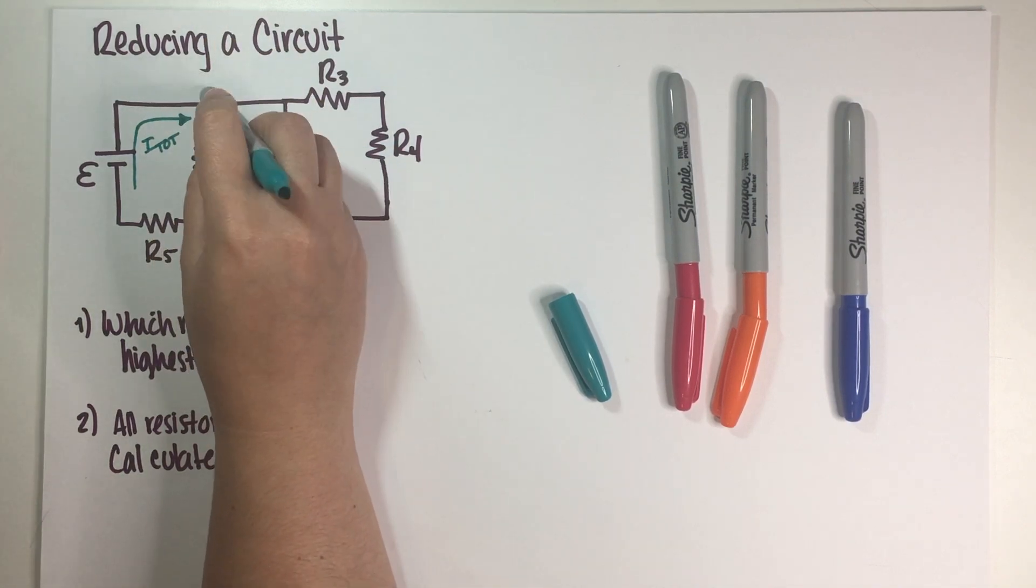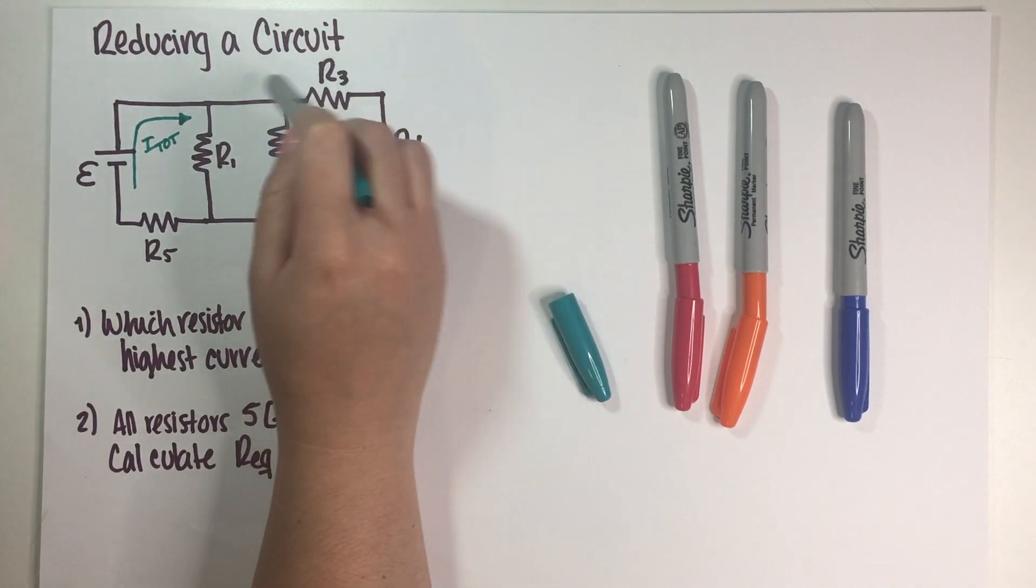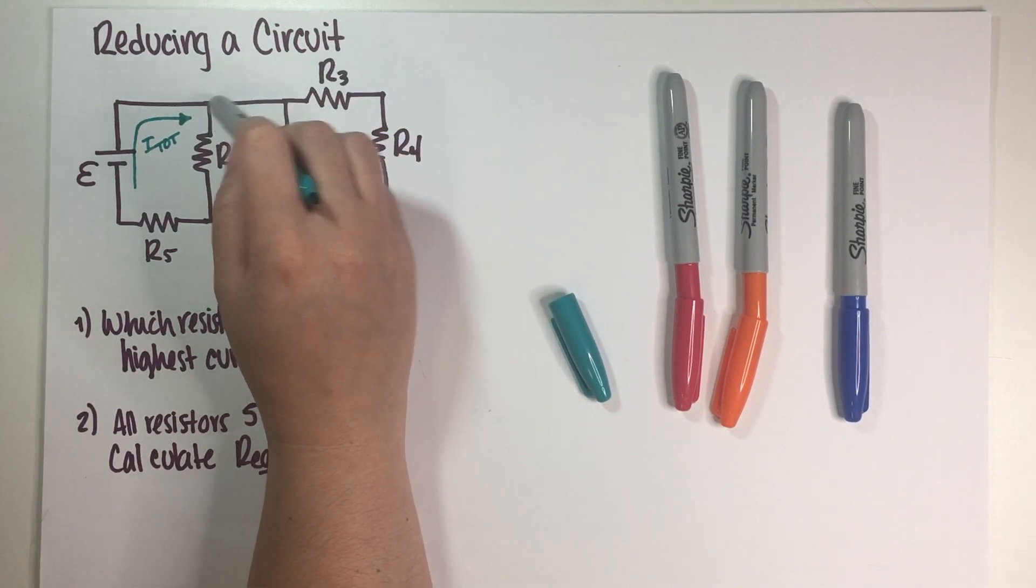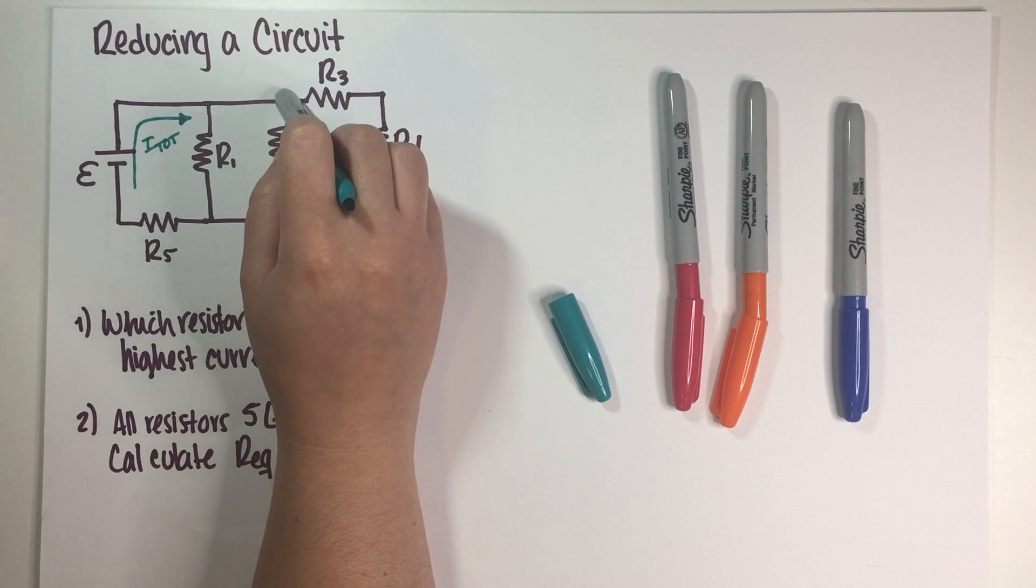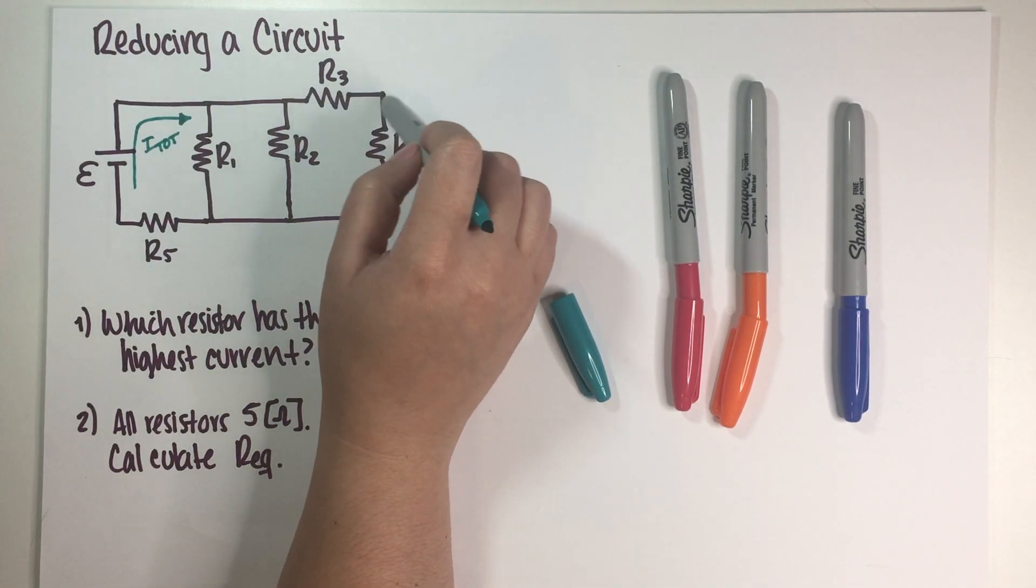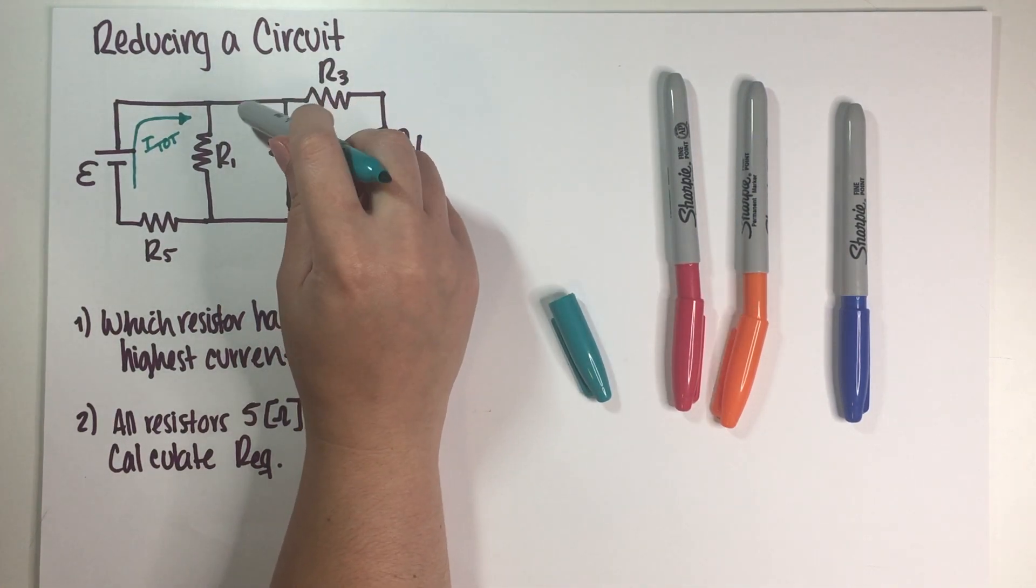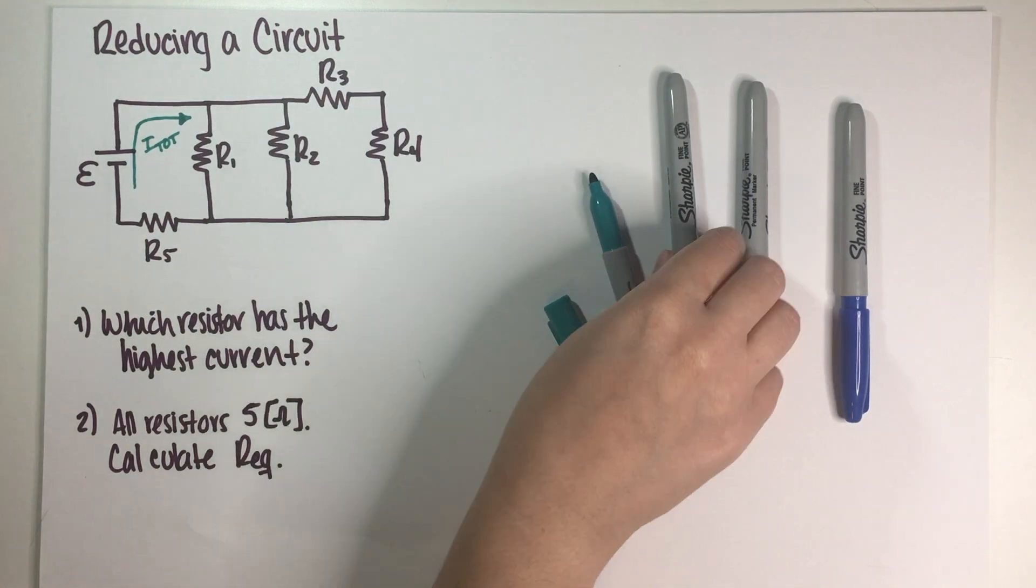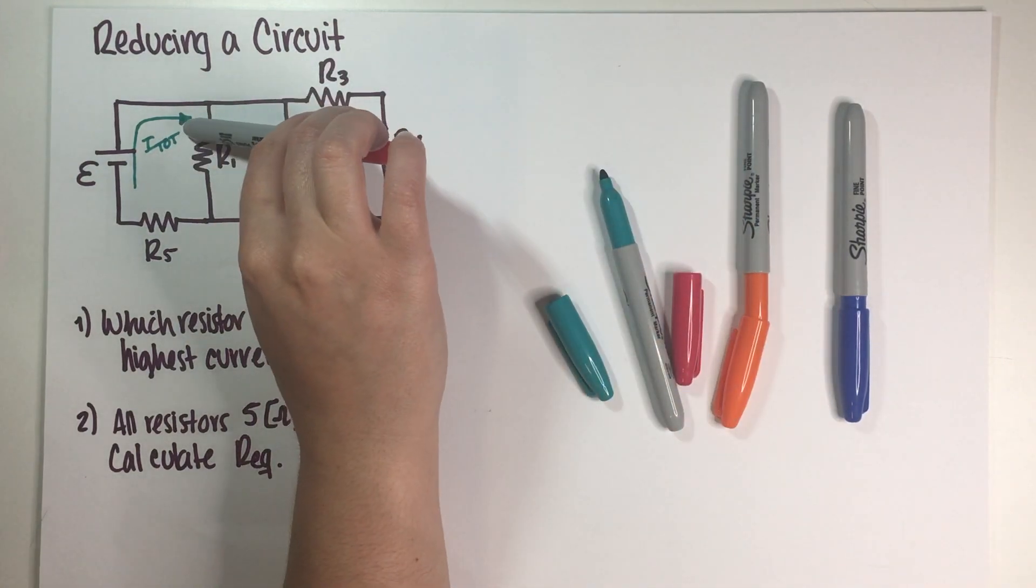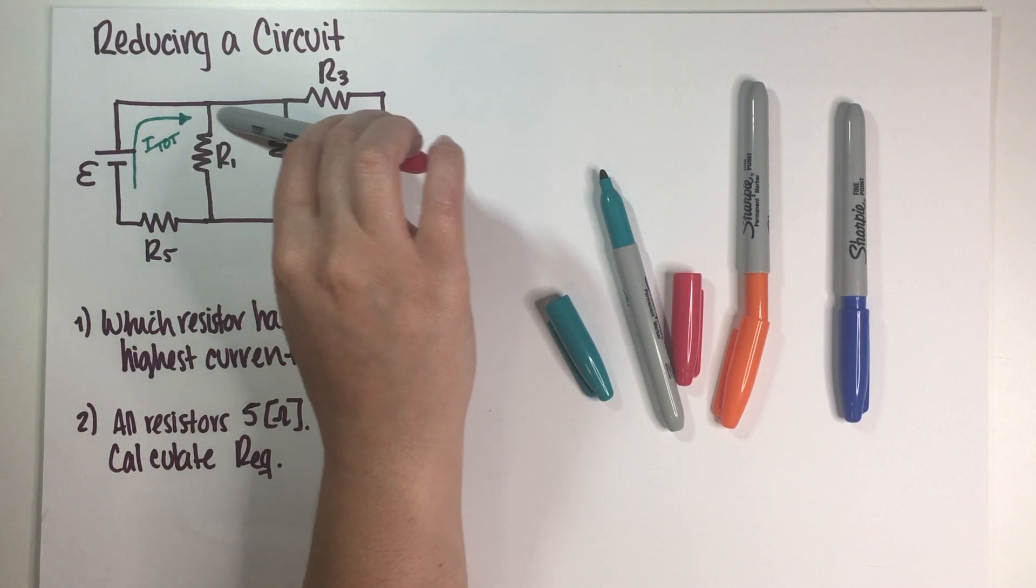So you're going to have a total amount of current crossing the battery. And then you have several junctions over here. Whenever you have a junction, well these two are junctions, this one is not. Whenever you have a junction, which by definition is just two or more wires connected together, which is why this is not a junction because this is the same wire, it just loops. Whenever we have a junction, our current is going to split up.